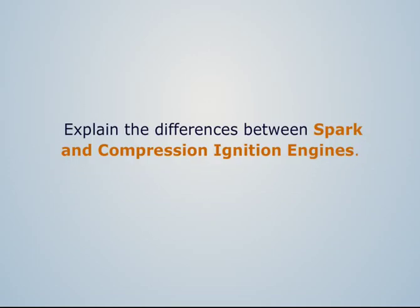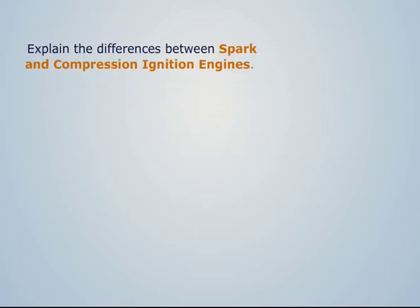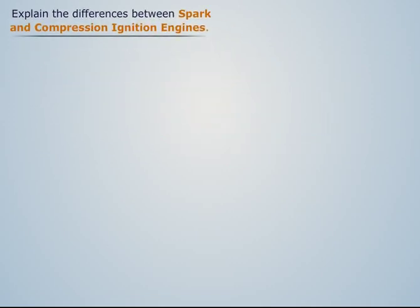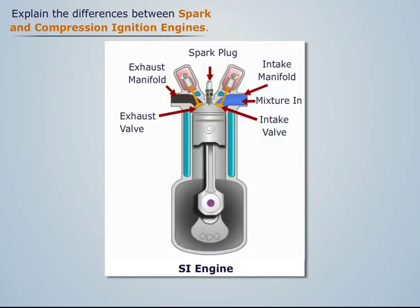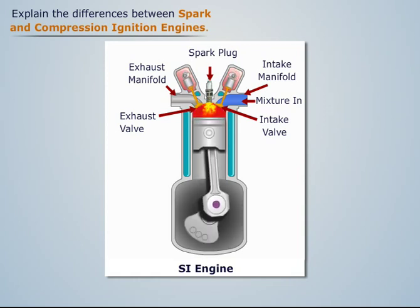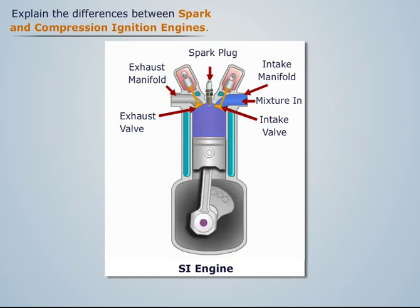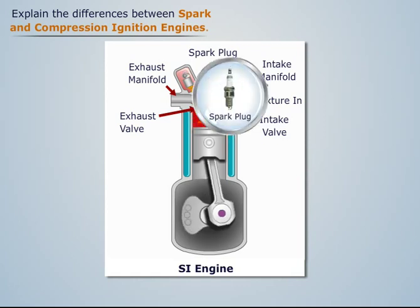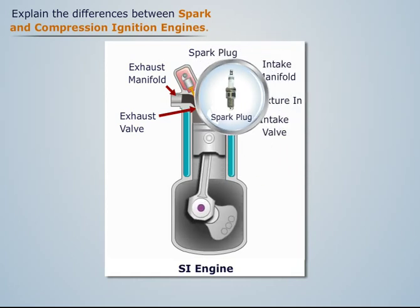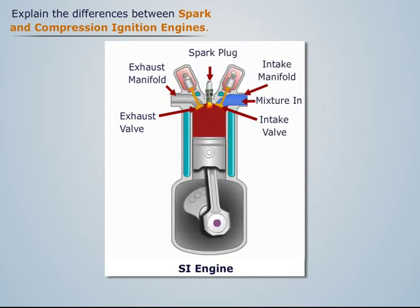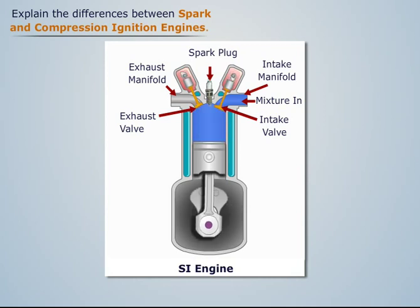Explain the differences between spark and compression ignition engines. A spark ignition engine is the engine in which combustion takes place with the help of a spark produced by the spark plug. Here, combustion is a constant volume process.